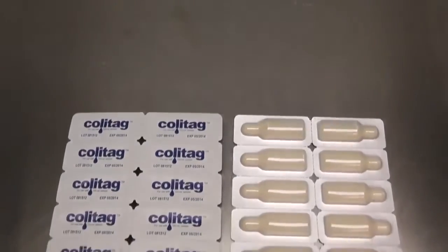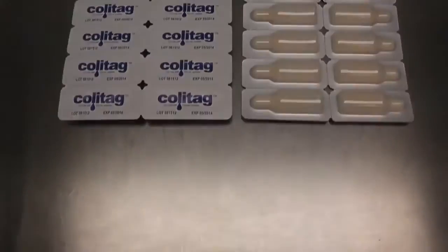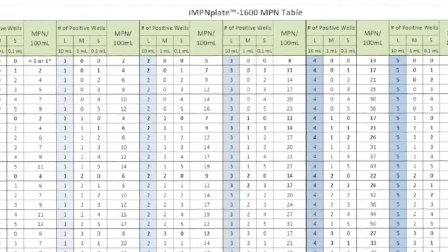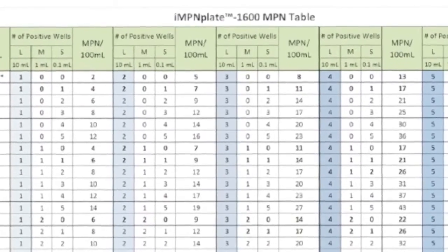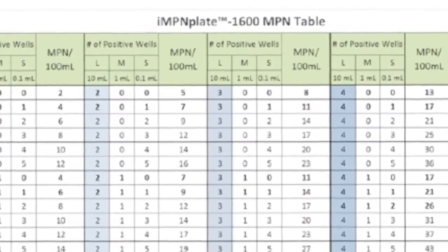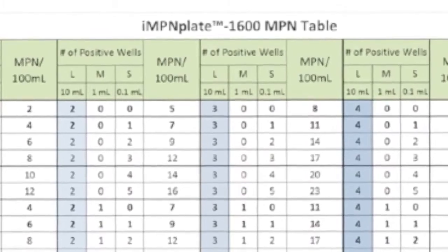The plate is designed for use with Cola tag and modified Cola tag methods, and final results can be recorded as the most probable number of coliforms and E. coli per 100 mL water sample.